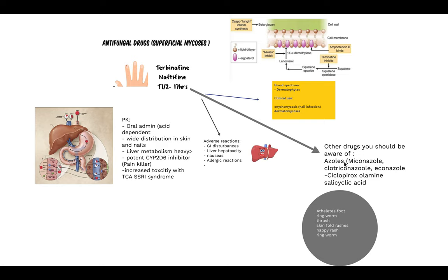Other drugs to be aware of are the topical azoles — miconazole, clotrimazole, and econazole — mainly used to treat athlete's foot, ringworm, thrush, skin fold rashes, nappy rash, and ringworm around the body in general. These are used for superficial mycosis. The systemic azoles — fluconazole, ketoconazole, itraconazole, and voriconazole — treat systemic mycosis, while miconazole, clotrimazole, econazole, and ketoconazole treat superficial mycosis. When a patient presents with ringworm or superficial skin infection, think to use the superficial azoles. Other agents such as ciclopiroxolamine and salicylic acid are also available.